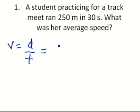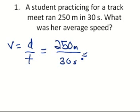We put our values in for distance, which is 250 meters, and our value for time, which is 30 seconds. Entering into our calculator, 250 meters divided by 30 seconds is 8.33 meters per second. That's the answer.